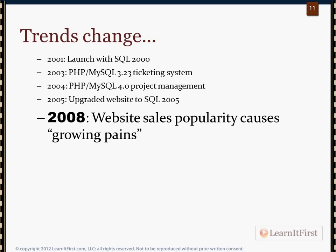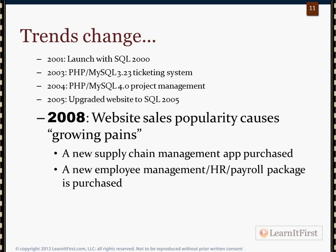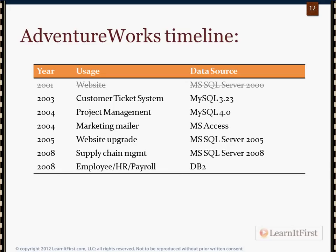By 2008 the website is more popular and they need a new supply chain management system. Things are going so well they also need an HR package to manage payroll, time off, and vacation requests. The supply chain management runs on SQL Server 2008 and the employee HR/payroll system runs on DB2. You might ask why a company would have both SQL 2005 and 2008 — often these are vendor packages with specific requirements. Balancing organizational needs against vendor requirements can make consolidation quite difficult.